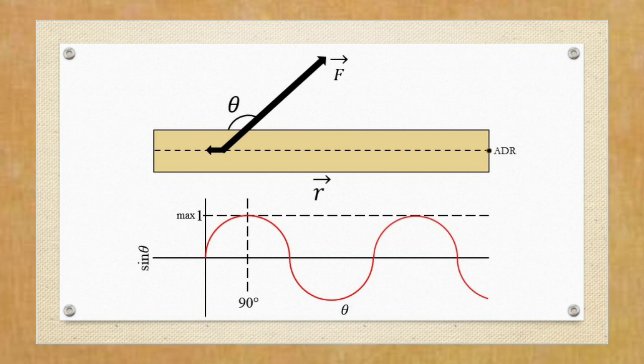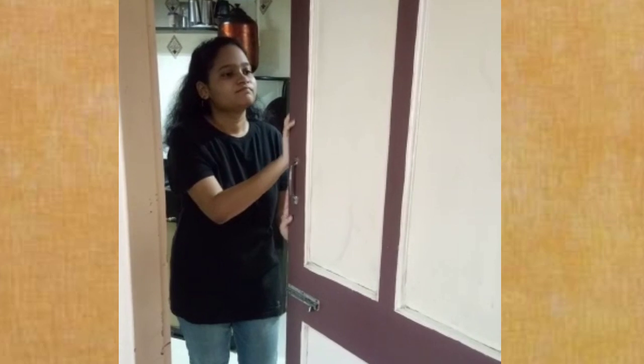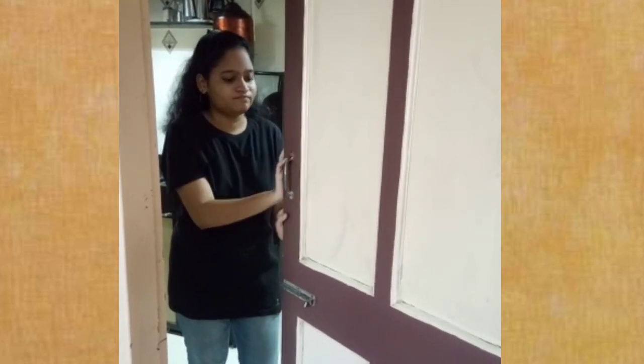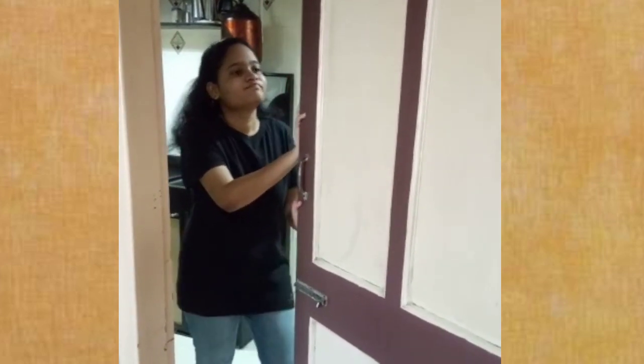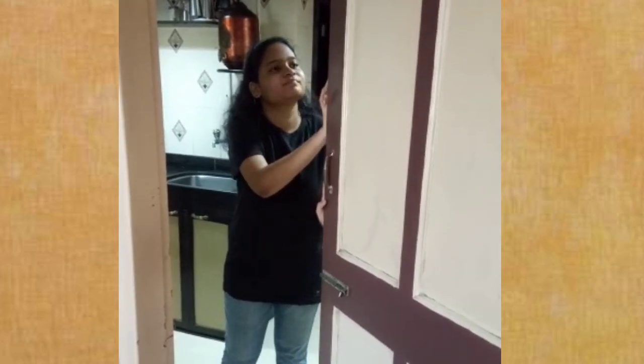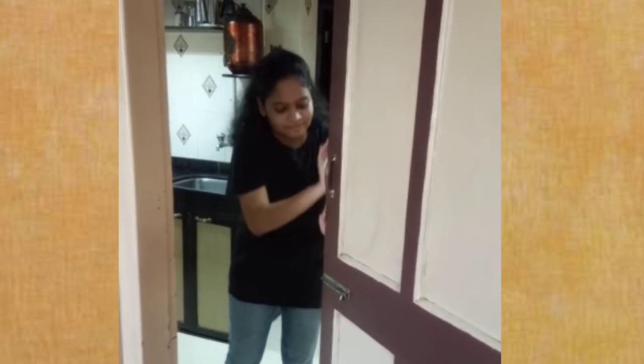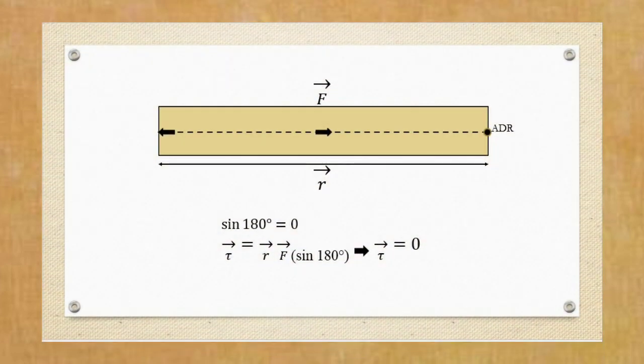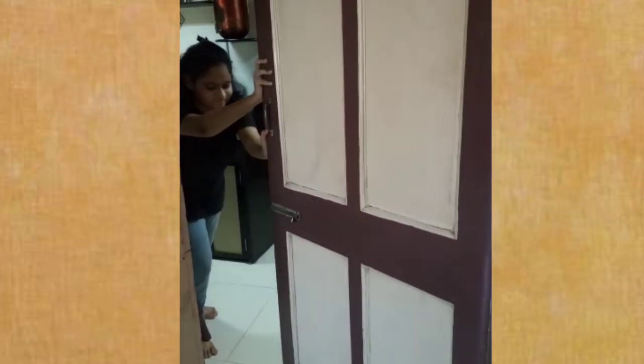One last case: what would happen if we try to open the door from the sides? If we push a door from the side for it to open, the direction of the applied force is opposite to the r vector and the theta between them is 180 degrees. The sin of 180 degrees is 0. Therefore, no matter how hard we push, there will be no torque on the door. The same will be the case with pulling the door from the side, since theta will be 0 degrees and sin of 0 degrees is 0.